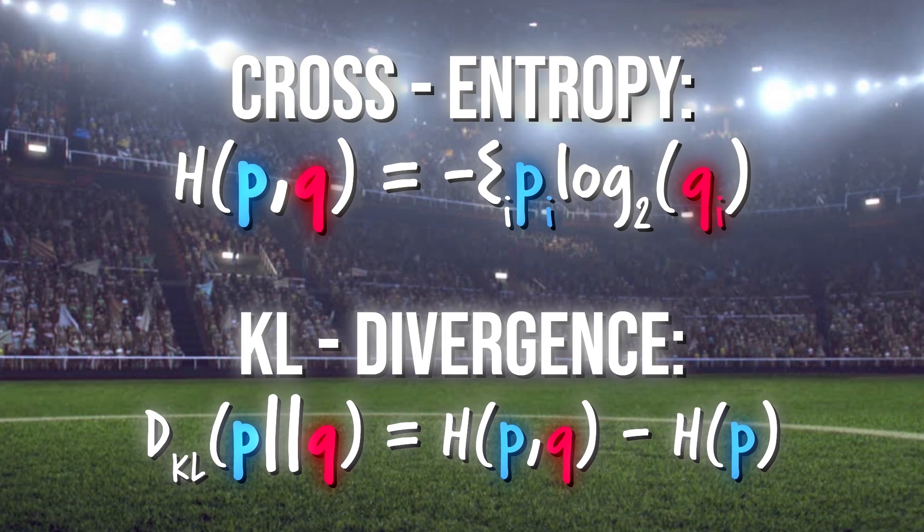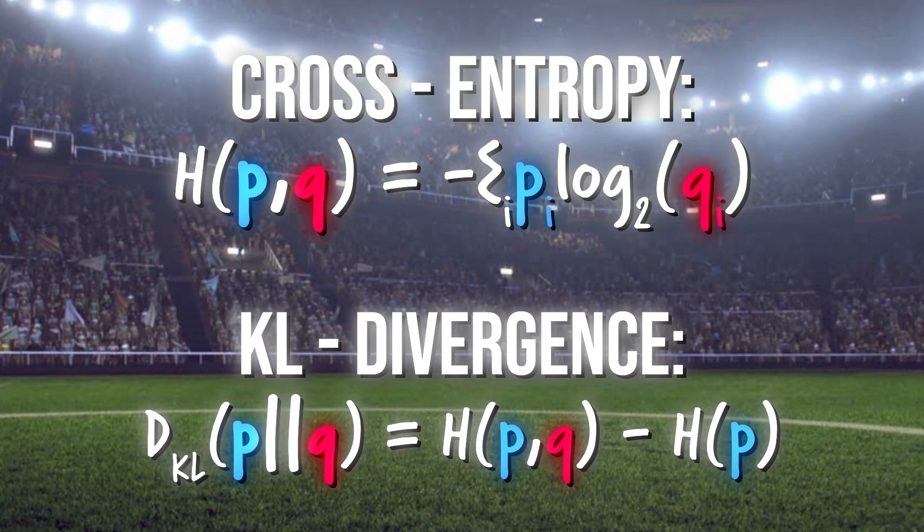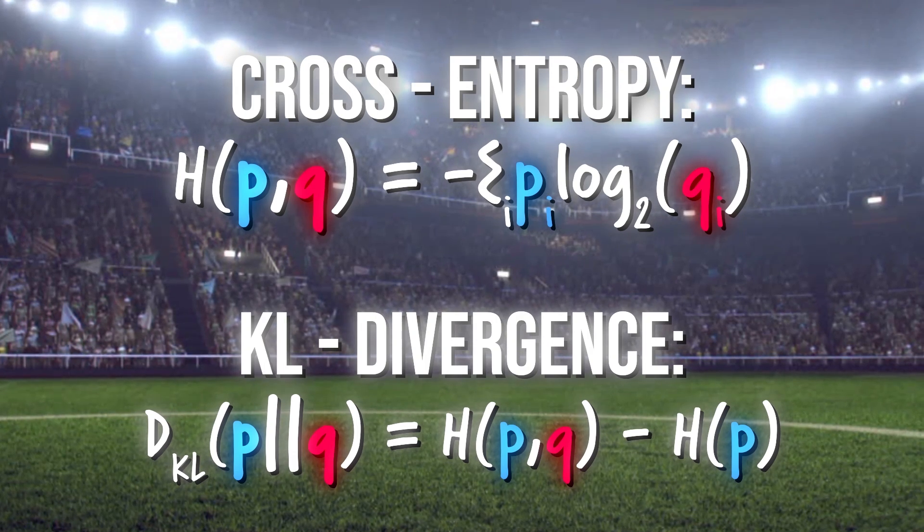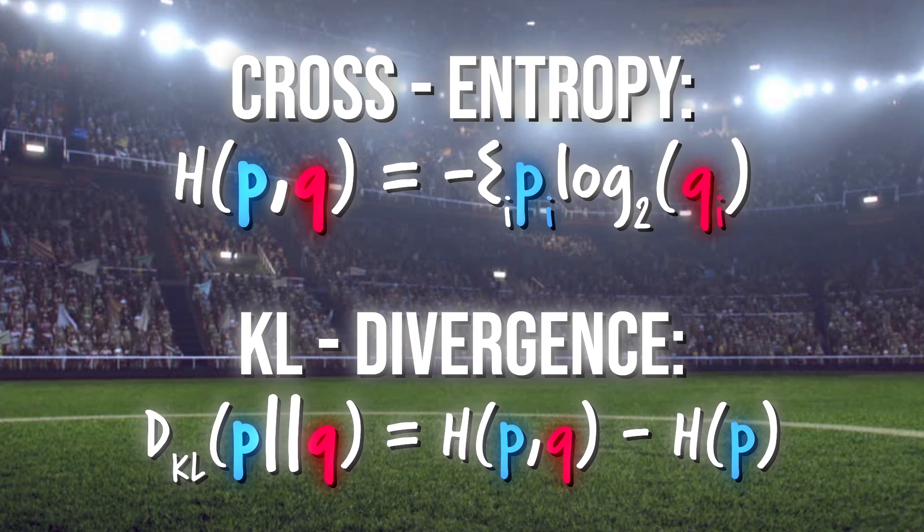This amount that the cross entropy exceeds the entropy is called the relative entropy, also called the Kullback-Leibler divergence. We can write this out several ways.